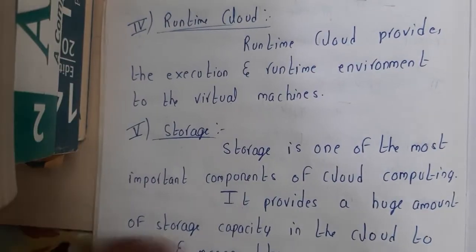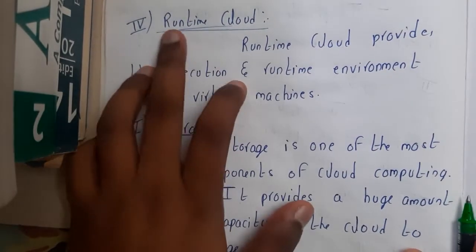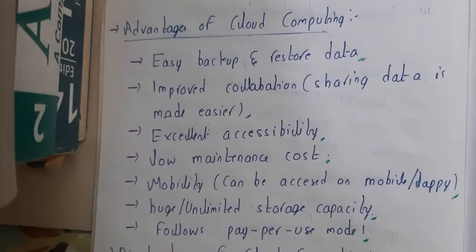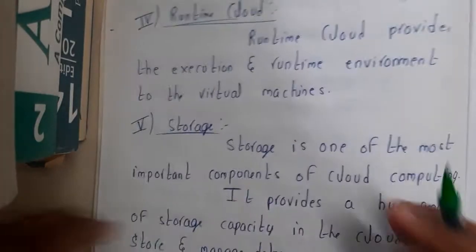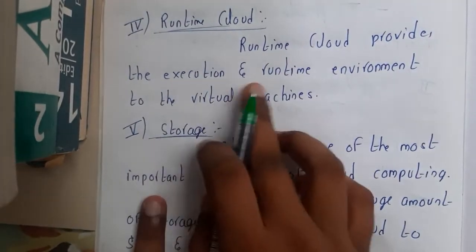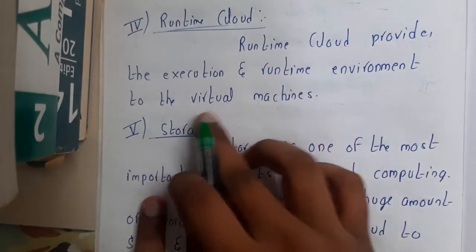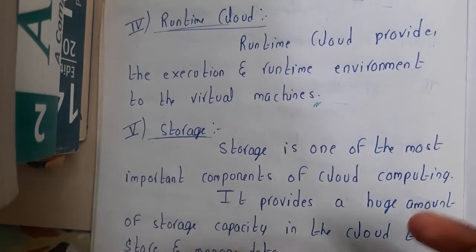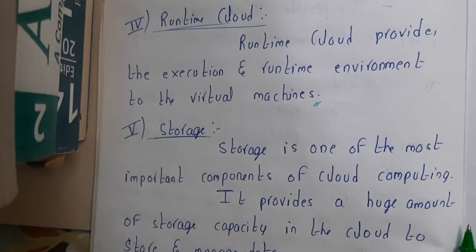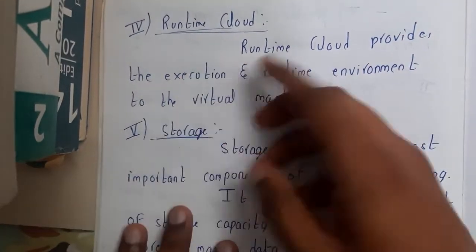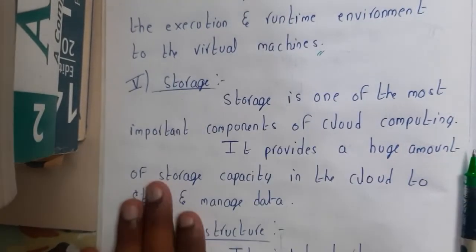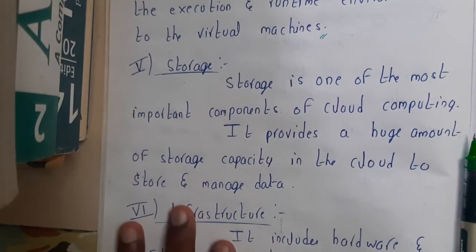The next component is Runtime Cloud. Runtime Cloud provides the execution and running environment for the virtual machines. Basically, if you build a virtual machine using AWS or anything, it needs somewhere to run — this is the component that helps with that.